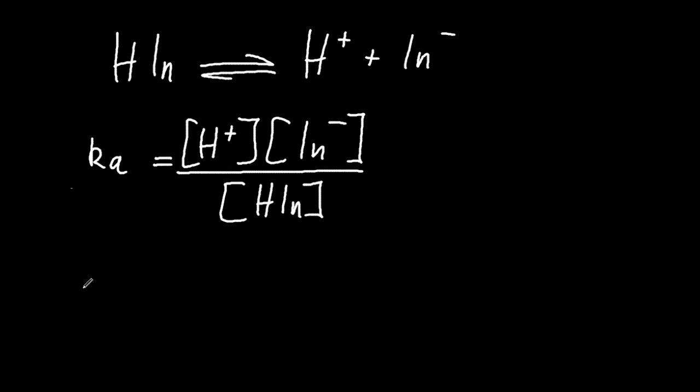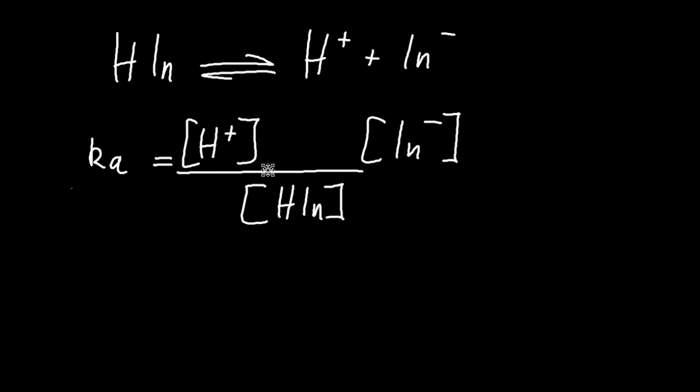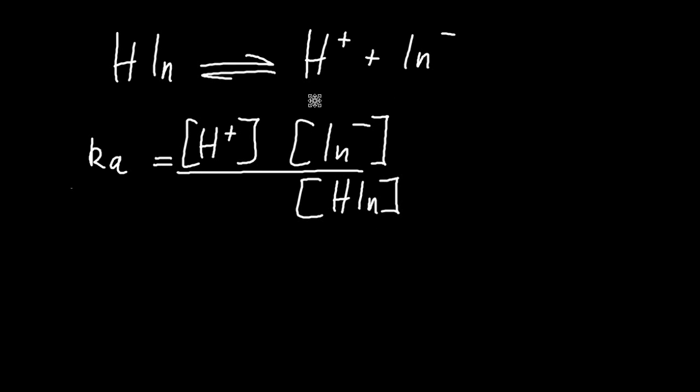Now I'm going to do some jiggery-pokery with this. I'm going to keep the equation the same, just rearrange it a little bit. I've raised that line there and put a multiply in. And you'll see why I've done that in a second. So let's say that H-I-N is green, and the In minus is purple.